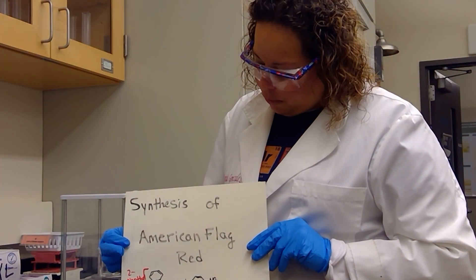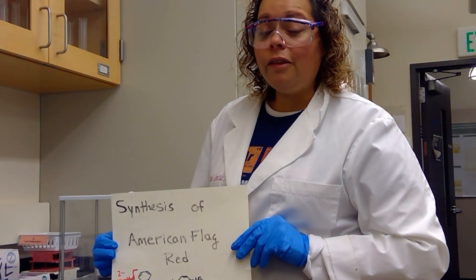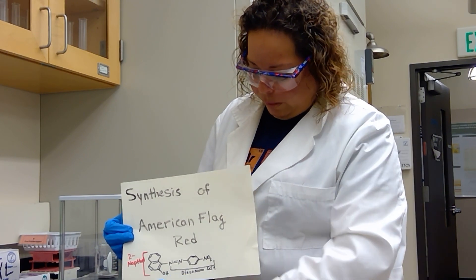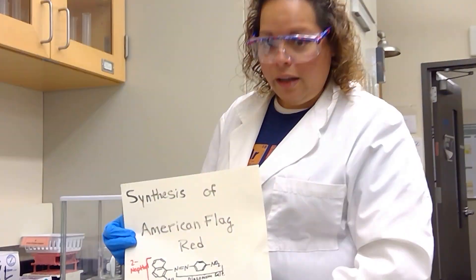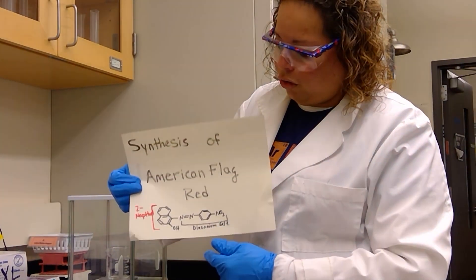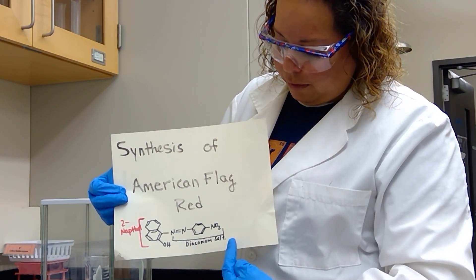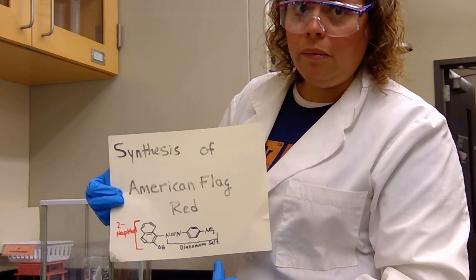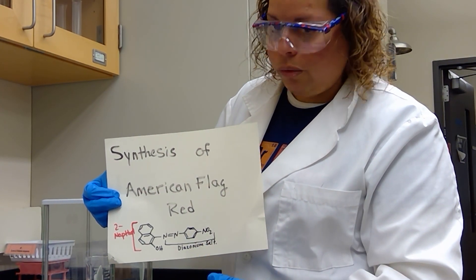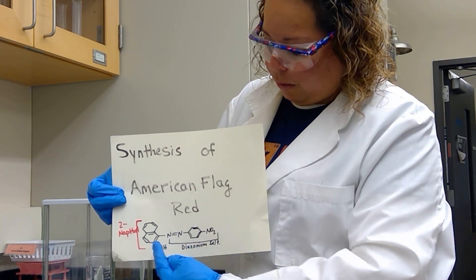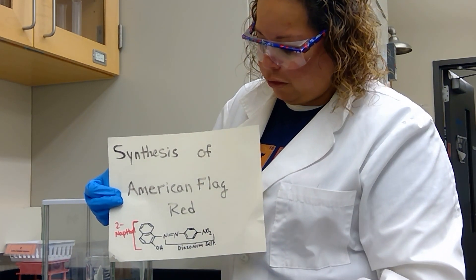All right, in this segment, we're going to take a look at the synthesis of the compound known as American Flag Red. On this worksheet, I have drawn out the compound that is known as American Flag Red. It's a combination of 2-naphthol, which is this half, and the diazonium salt that we created in the previous portion. So it's the same diazonium salt that we used for Easter Purple, and we'll be able to couple it with a new compound known as 2-naphthol.